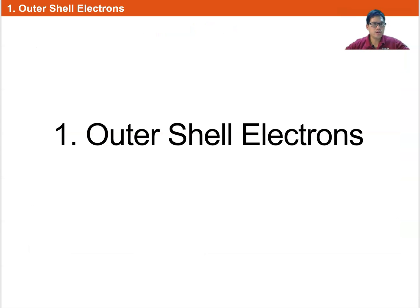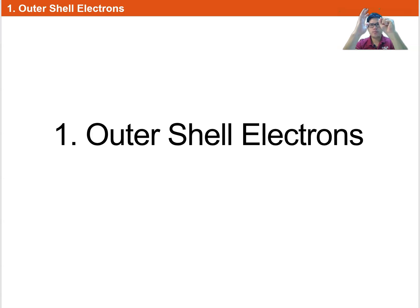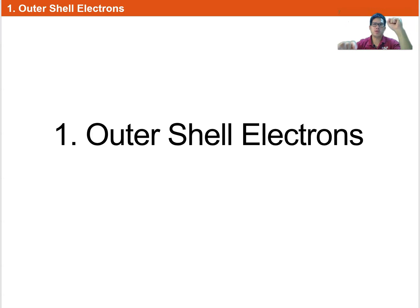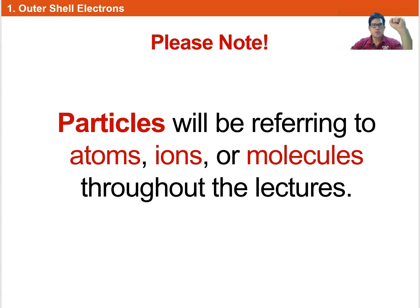Let's look at the first part: outer shell electrons. We learned in Chapter 1 that the electron basically has a core made of protons and neutrons, with electrons surrounding the outside. The electrons are arranged in shells — shell 1, shell 2, shell 3, and so forth — further and further away from the core. We will be referring to particles: atoms, ions, and molecules throughout the lecture.